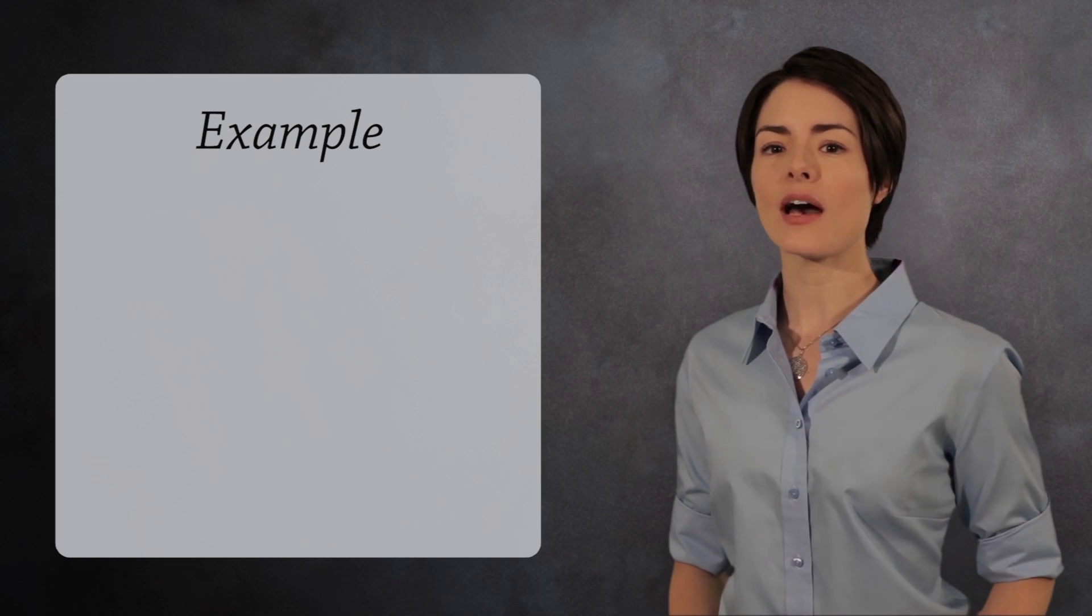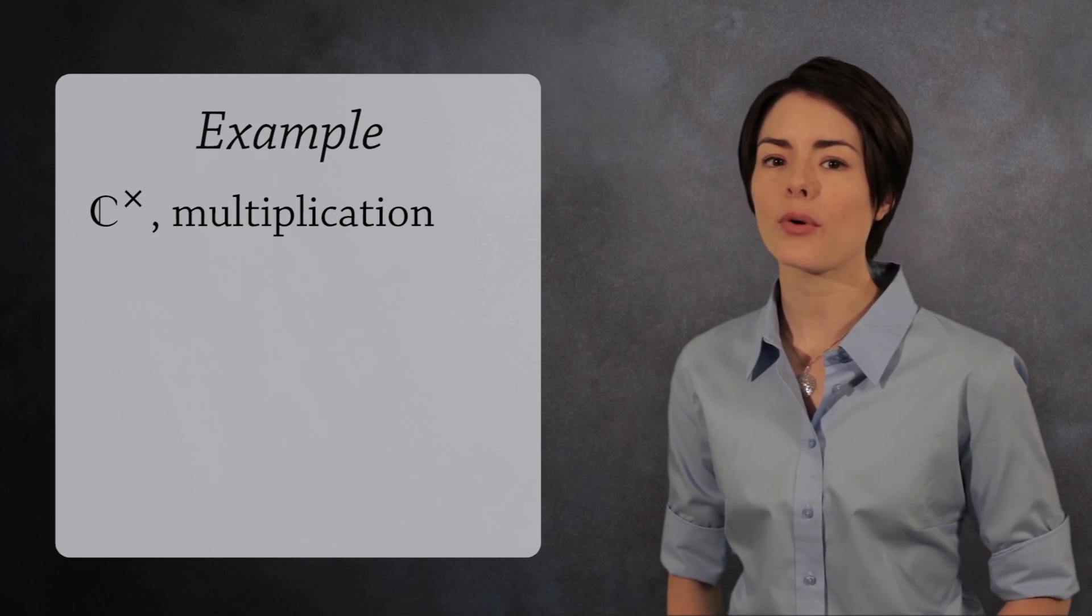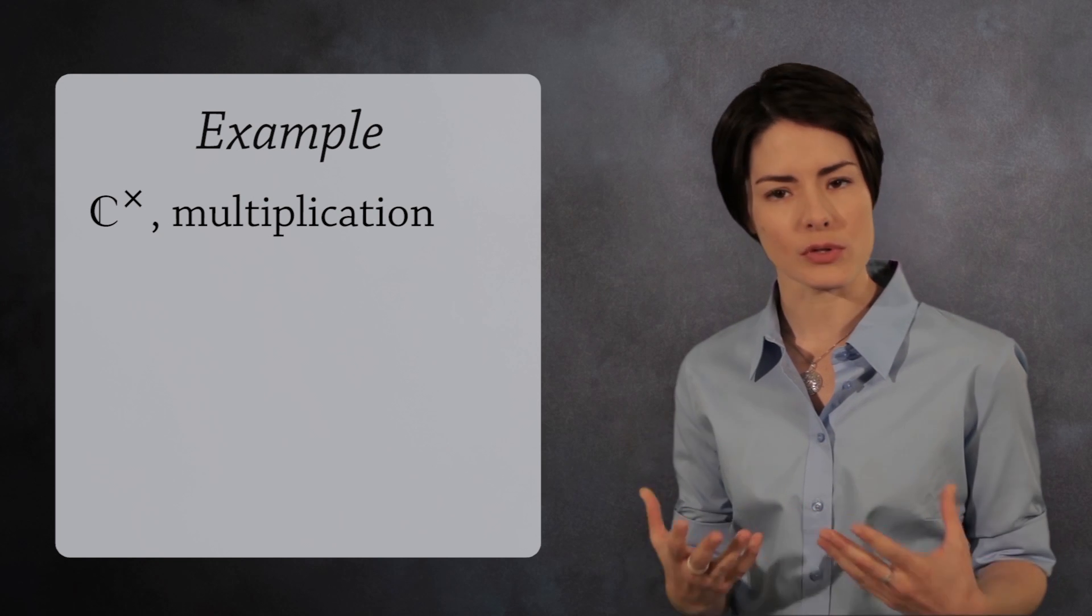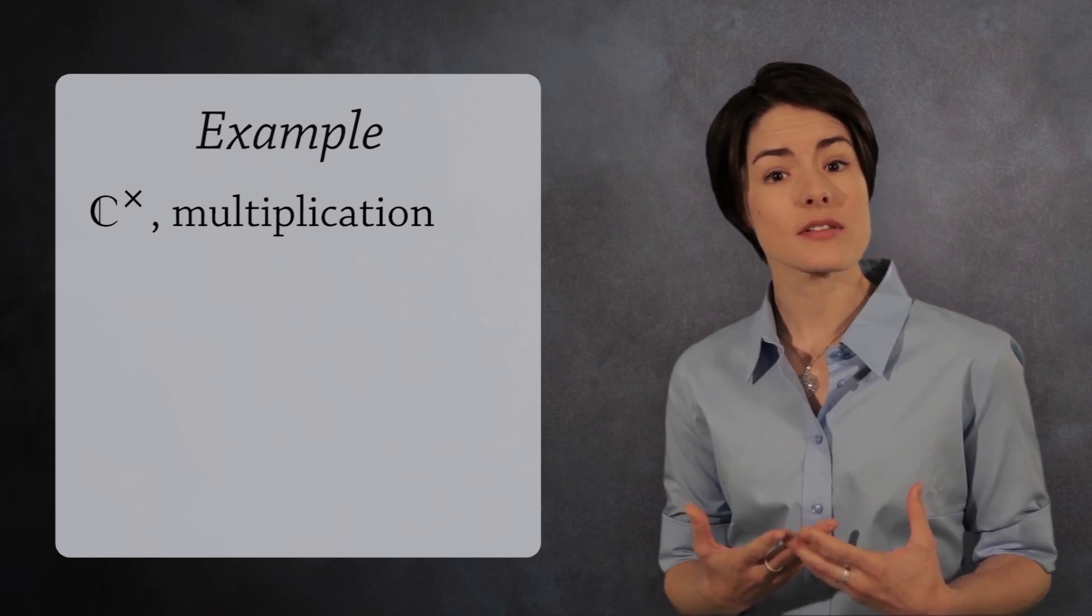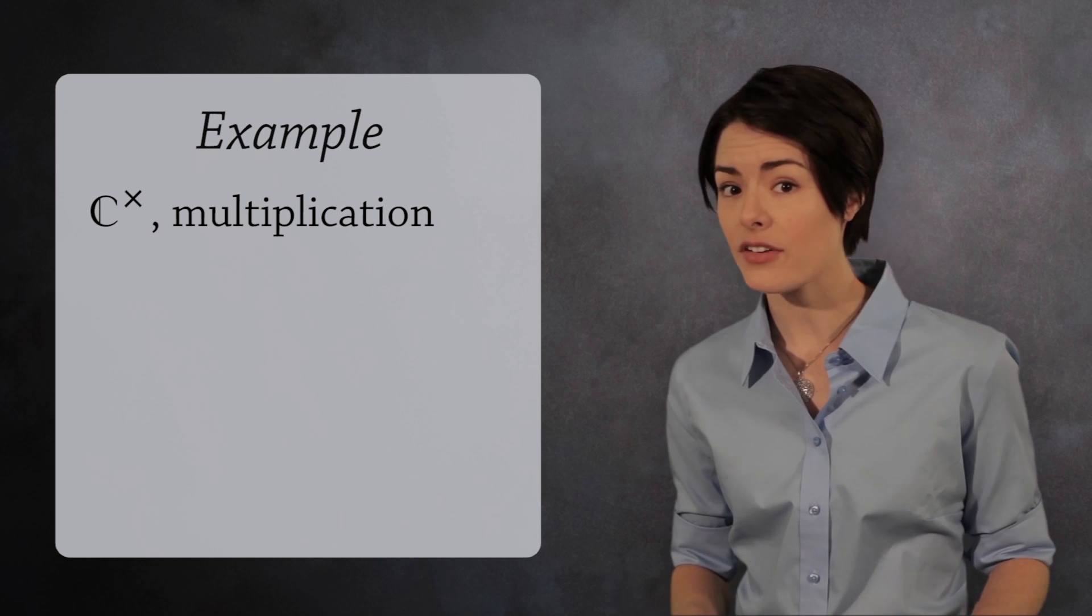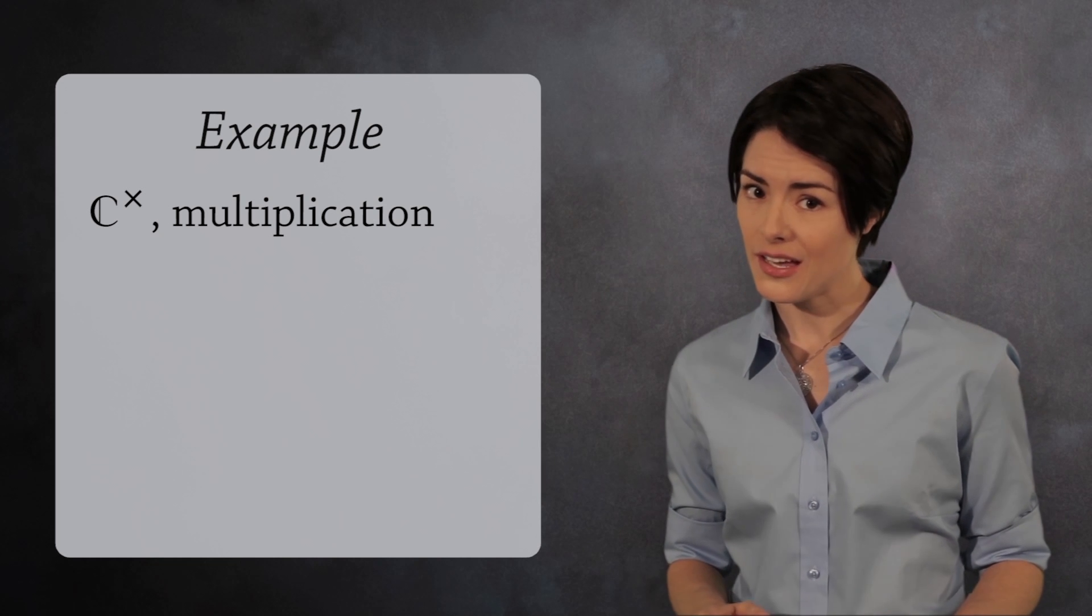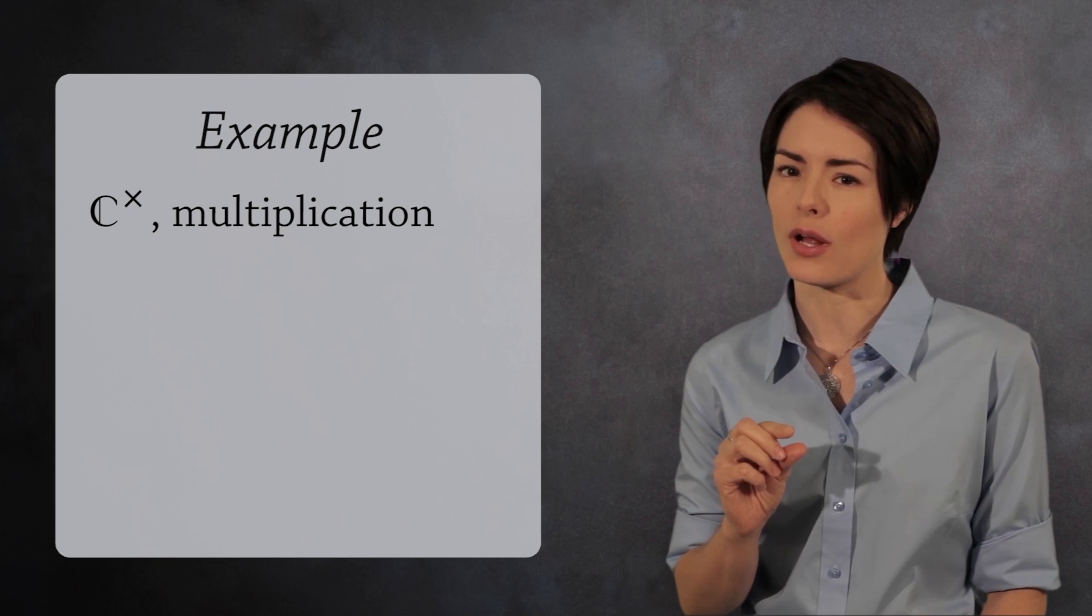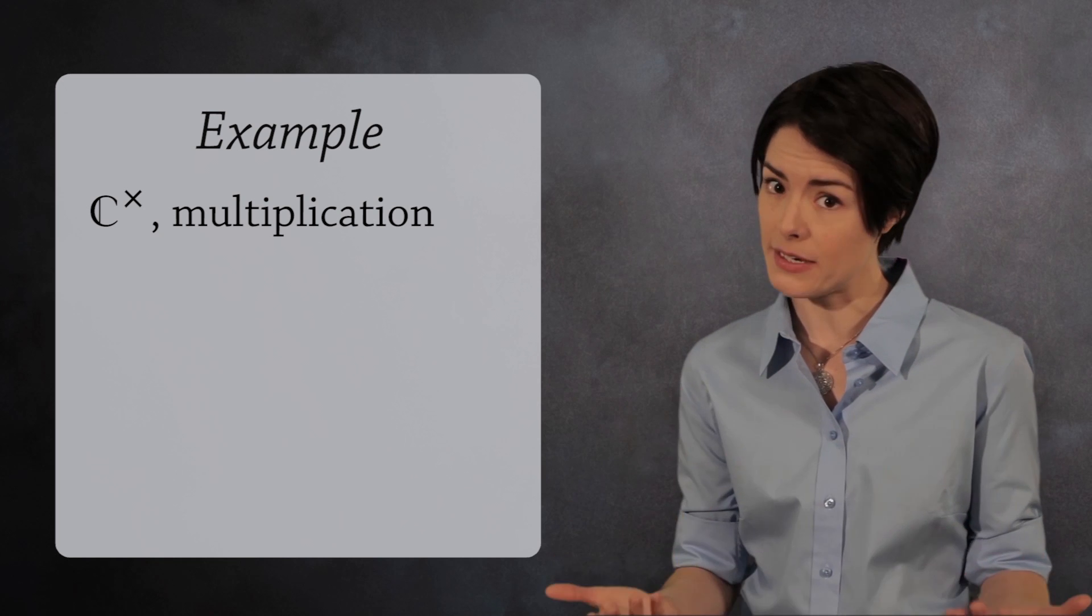For our next example, let's look at the complex numbers. The non-zero complex numbers form a group under multiplication. Again, we must omit zero because zero does not have an inverse under multiplication. And like before, we write a small multiplication symbol above the c to show we are omitting zero.